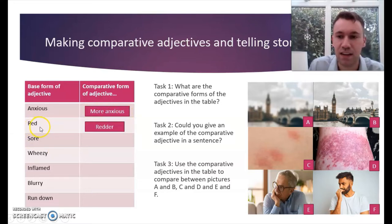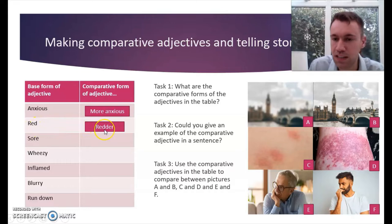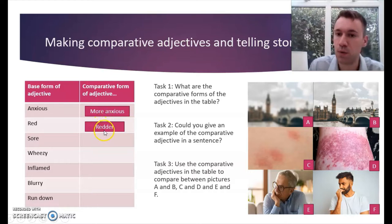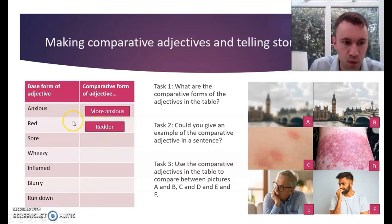'Red' — 'redder.' We see a double consonant. Why? That is because 'red' ends in a vowel and a consonant, therefore in the comparative form we put a double consonant.